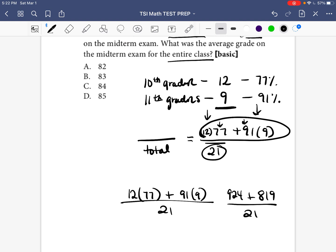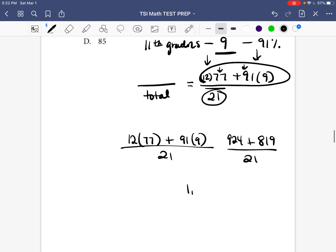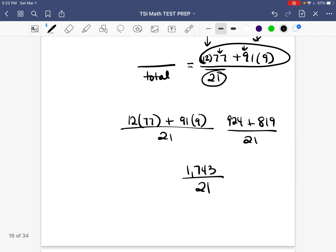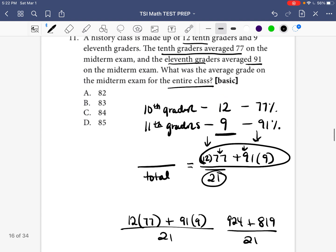Now go ahead and add 924 and 819, and you should get 1743 over 21. And now just remember, anytime you see a fraction, a fraction represents a division problem. You take the top number and you divide it by the bottom number. So you do 1743 divided by 21 to get the average. So I'm going to divide that number by 21 and I get 83. And so our answer is going to be B.